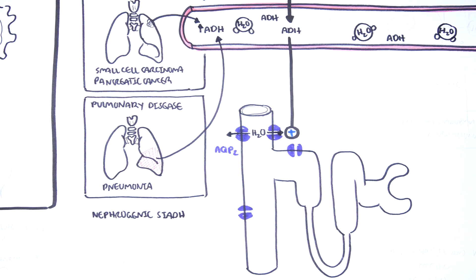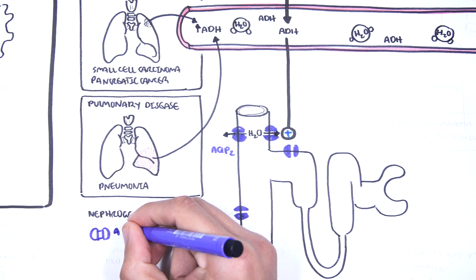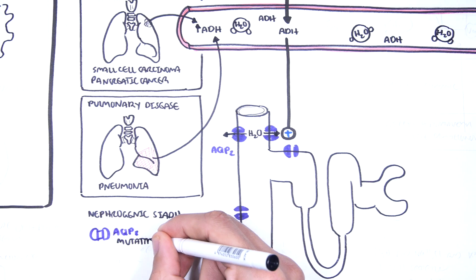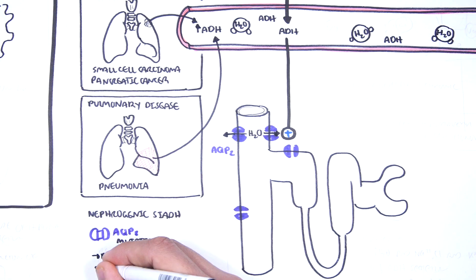Nephrogenic SIADH is aquaporin-2 mutation, which causes aquaporin-2 to remain open, resulting in water retention.